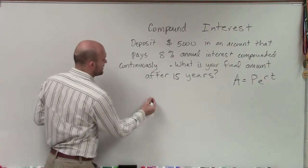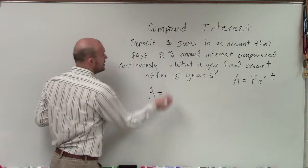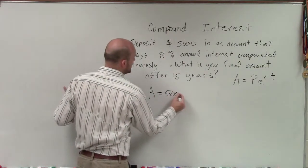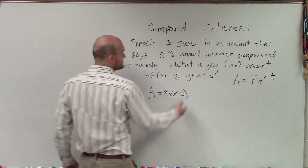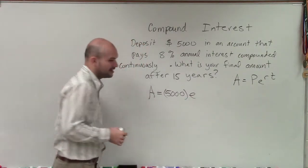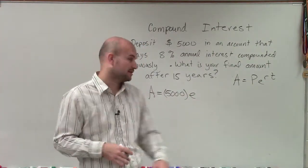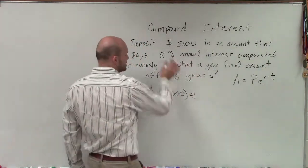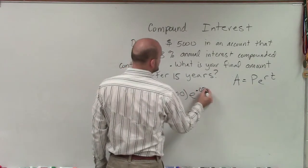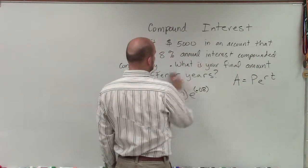So again, we need to be able to figure our final value. So we're going to have A equals, our principal in this case is $5,000, times e, which is going to be a constant which we'll use in our calculator, times our interest rate in decimal form, which would be 0.08, times t, which is in years.